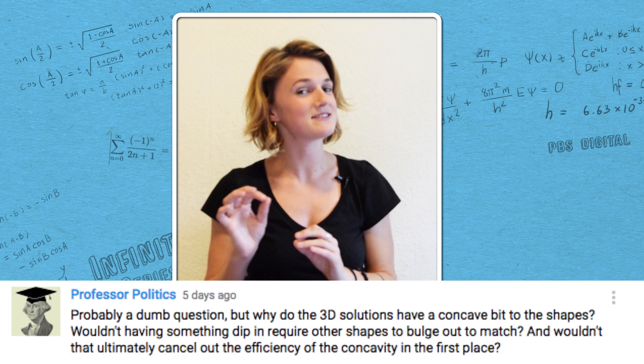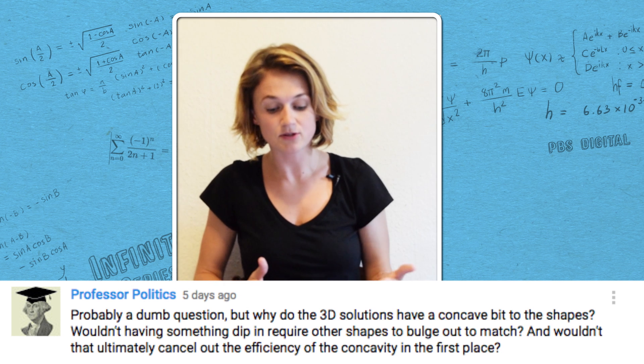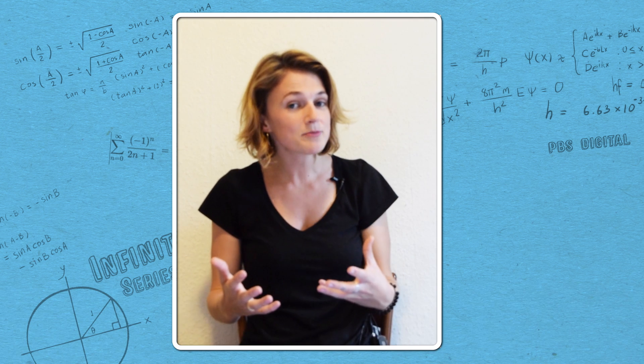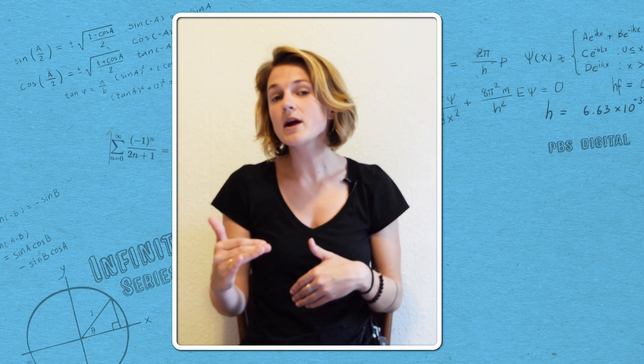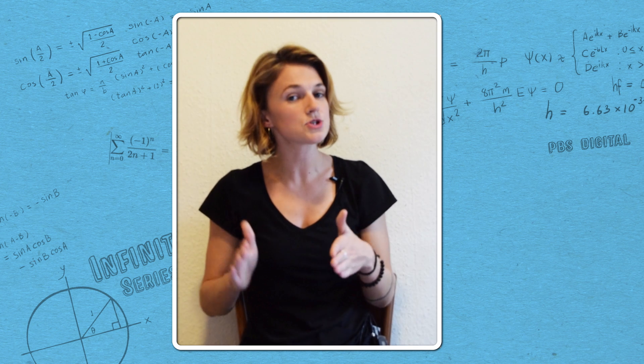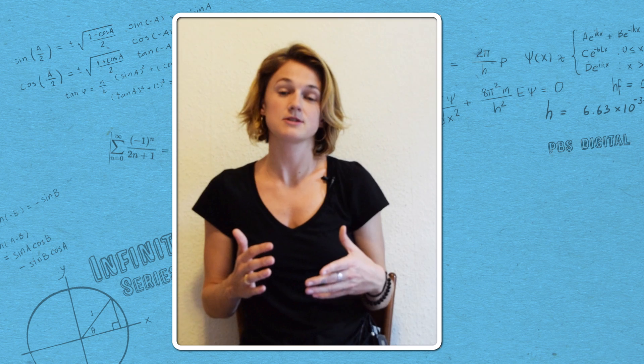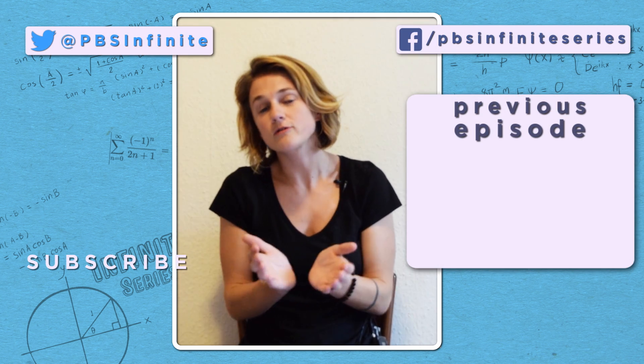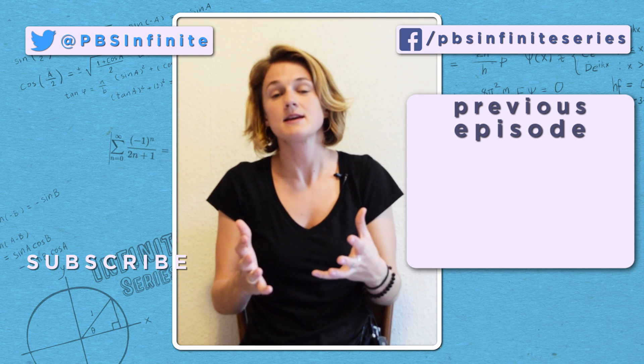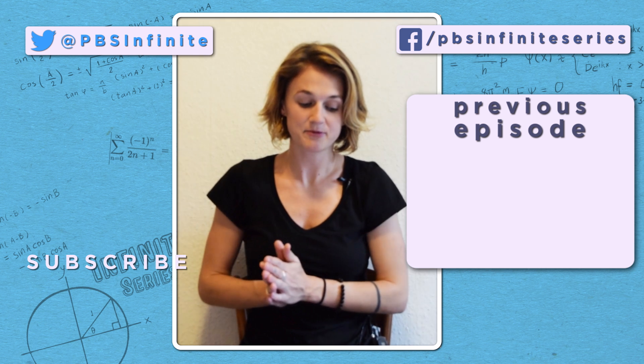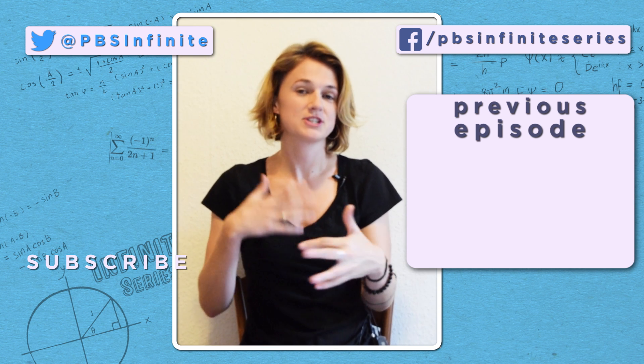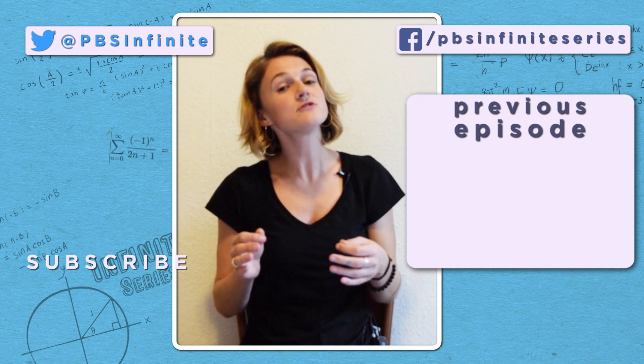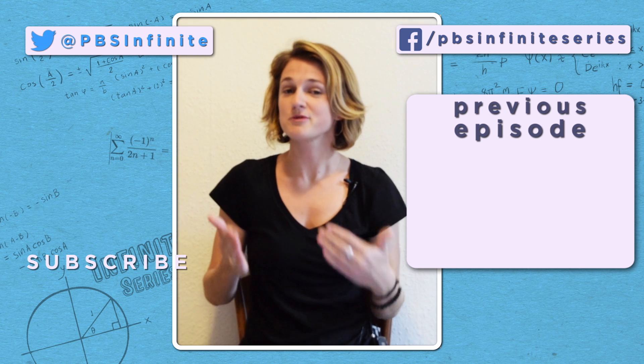Professor Politics and several others ask, why do the 3D solutions have a concave bit to the shapes? So, the two-dimensional solutions that we looked at, like the squares and the hexagons, only use straight lines. But the 3D solutions, both the Kelvin one and the Weaire-Phelan structure, have curved or bulging sides. And those are actually required by something known as Plateau's Laws, which study soap foam and the shapes that are possible for soap foam. And I'll include a link in the description with more information about it.